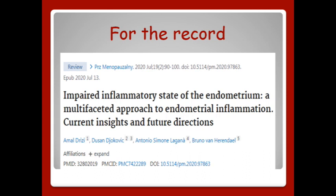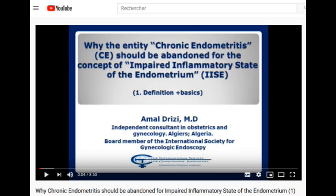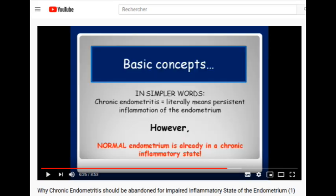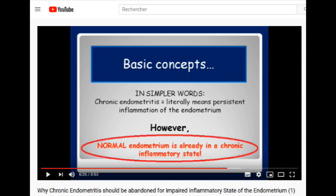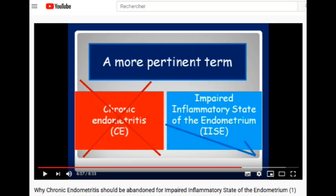For the record, these videos are based on our recently published paper, which I link to in the description below. We have already addressed in a previous video the problematic definition of chronic endometritis, which literally means persistent inflammation of the endometrium, knowing that normal endometrium is already in a chronic inflammatory state, which is why Impaired Inflammatory State of the Endometrium — IISE — is a more accurate terminology than chronic endometritis to name a disorder.